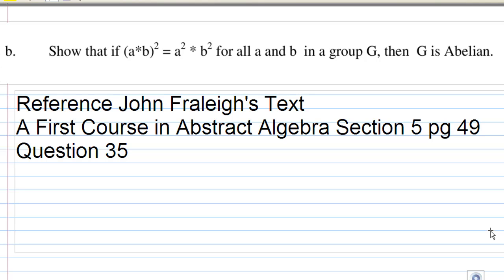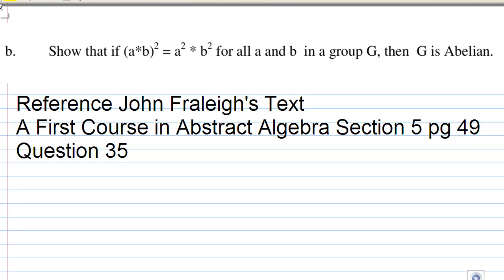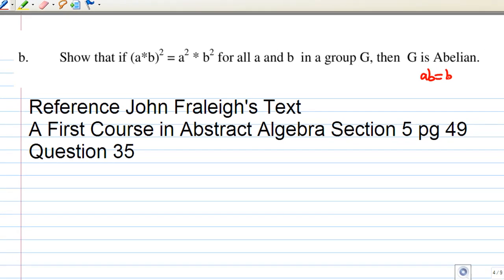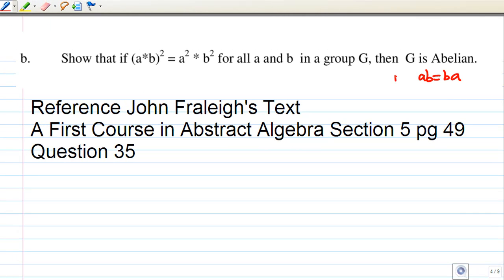We are going to show that if (a*b)² = a²*b² for all a and b in group G, then G must be abelian. The meaning of abelian is that ab = ba, a times b equals b times a for all a, b in G.